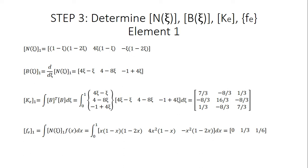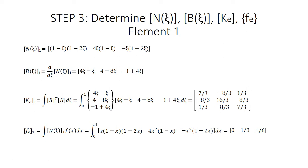For the F matrix of element 1, we use the integral of the interpolation function matrix times f(x). Since f(x) = x and in two dimensions x = z, we factor x into the interpolation functions — giving terms like x(1 - x) and (1 - 2x) — then multiply by x and change z's to x's. Integrating from 0 to 1 gives us the F matrix for element 1.